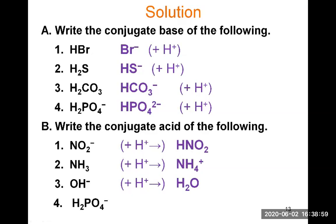Last, H2PO4-: find the conjugate acid by adding an H+. Adding H+ gives three hydrogens, changing the subscript from H2 to H3PO4. The positive charge from H+ cancels the negative charge from H2PO4-, giving a neutral molecule: H3PO4. So phosphoric acid, H3PO4, is the conjugate acid of H2PO4-.